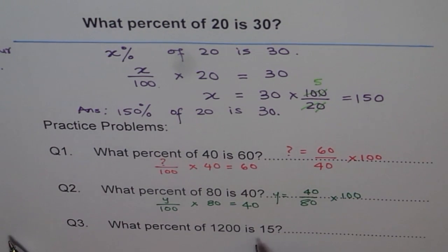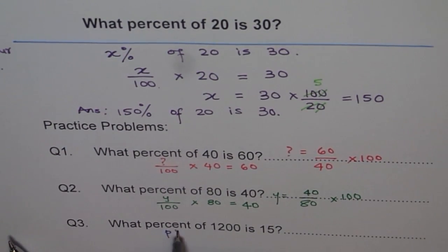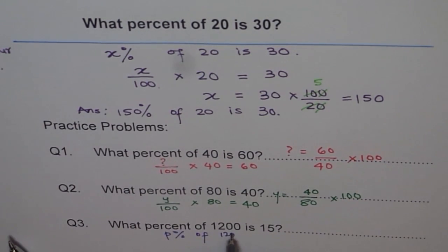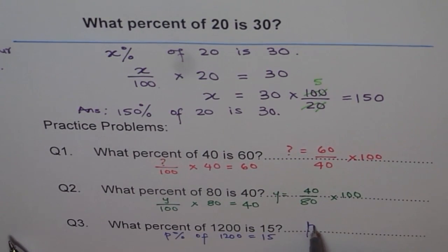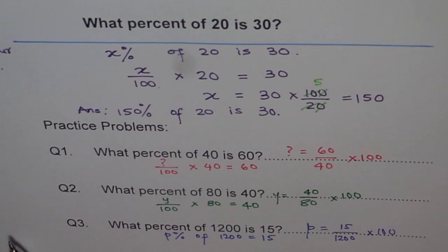For the last one: what percent of 1200 is 15? Define a variable — let's use p percent. You say p percent of 1200 equals 15, so p equals 15 divided by 1200 times 100. That is how you solve problems where you need to find what percent.